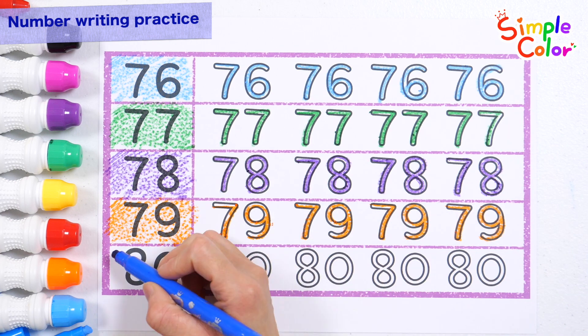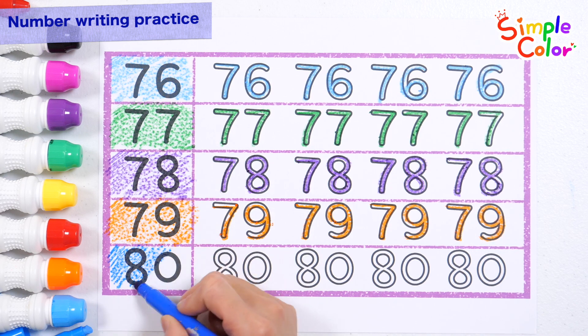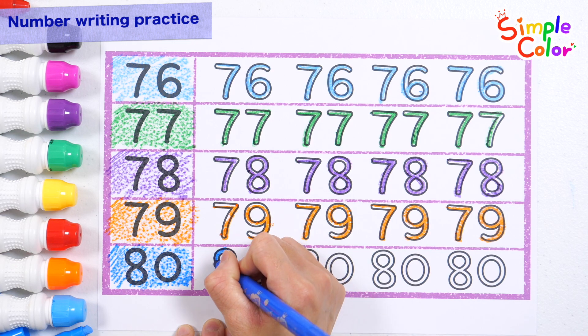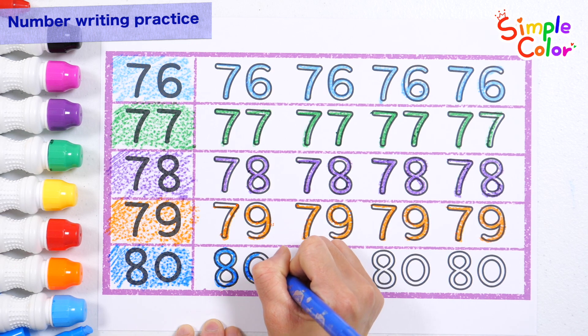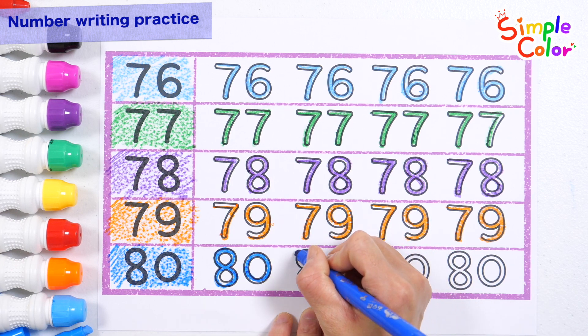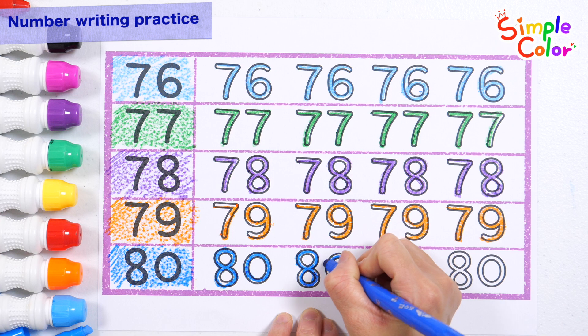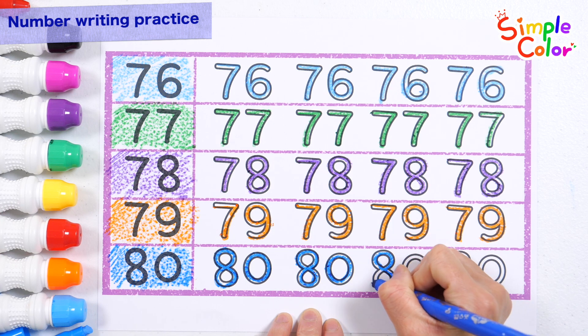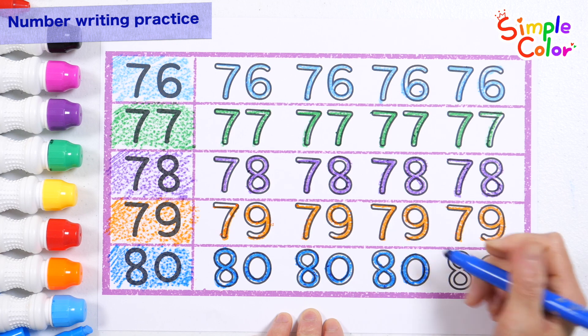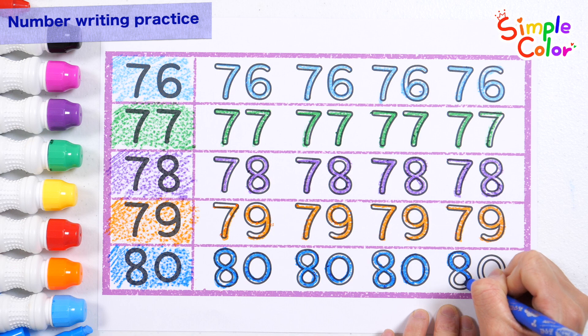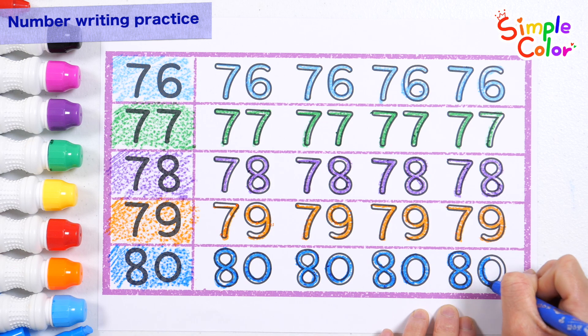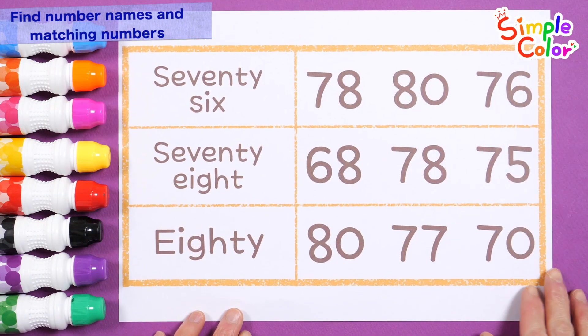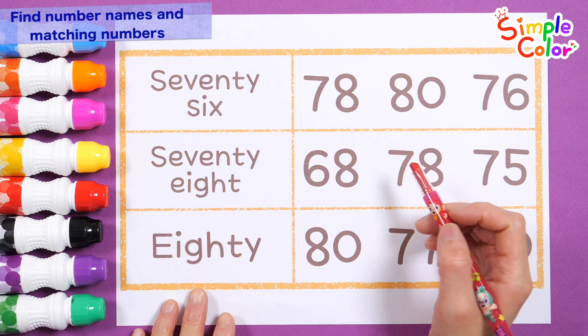Let's read the number 80 and write it with a blue pencil. 80, 80, 80. Good job! Let's read the names of the numbers and circle the correct number.